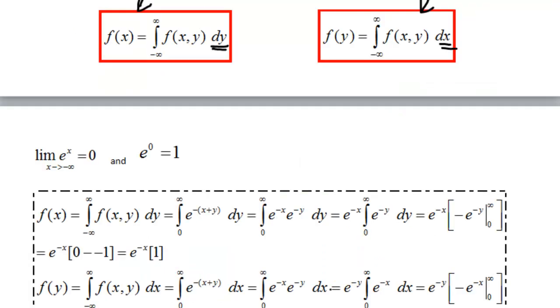Maybe, first of all, a quick reminder of some exponential properties. What happens to e^x when x tends to minus infinity? Well, it tends to 0. What happens when x is 0? Well, e^0 is 1.